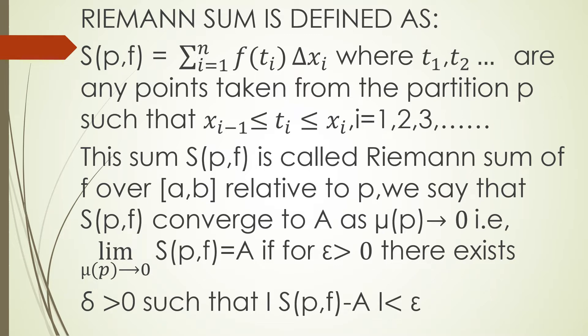We say that S(p,f) converges to A as μ(p) tends to 0. That is, limit of S(p,f) equals A where μ(p) tends to 0, if for ε > 0 there exists δ > 0 such that |S(p,f) - A| < ε. Here, the μ(p) is the length of the largest sub-interval.